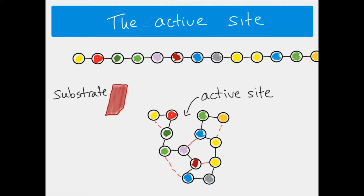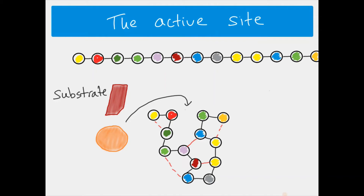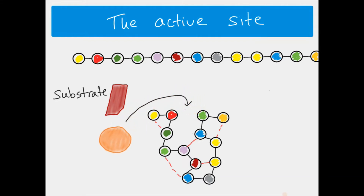Here is our substrate molecule. Importantly, the substrate which is going to fit into the active site has to be complementary in shape — meaning the shape of the active site matches the shape of the substrate. If you have a different substrate, it won't fit. For example, this orange substrate colliding with the enzyme would not fit into the active site because the shapes are not complementary, so the enzyme cannot catalyse any reaction with that substrate.